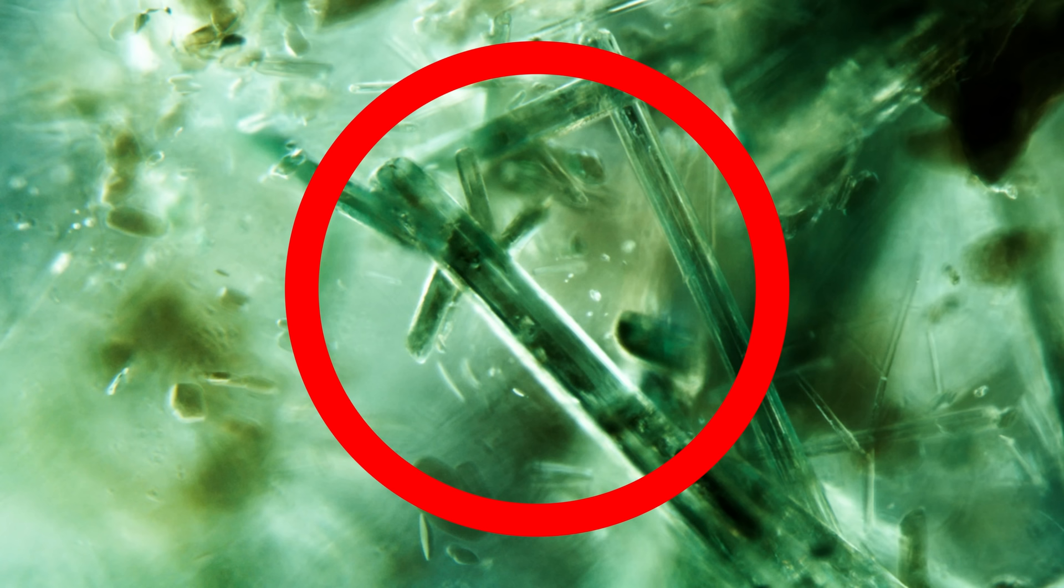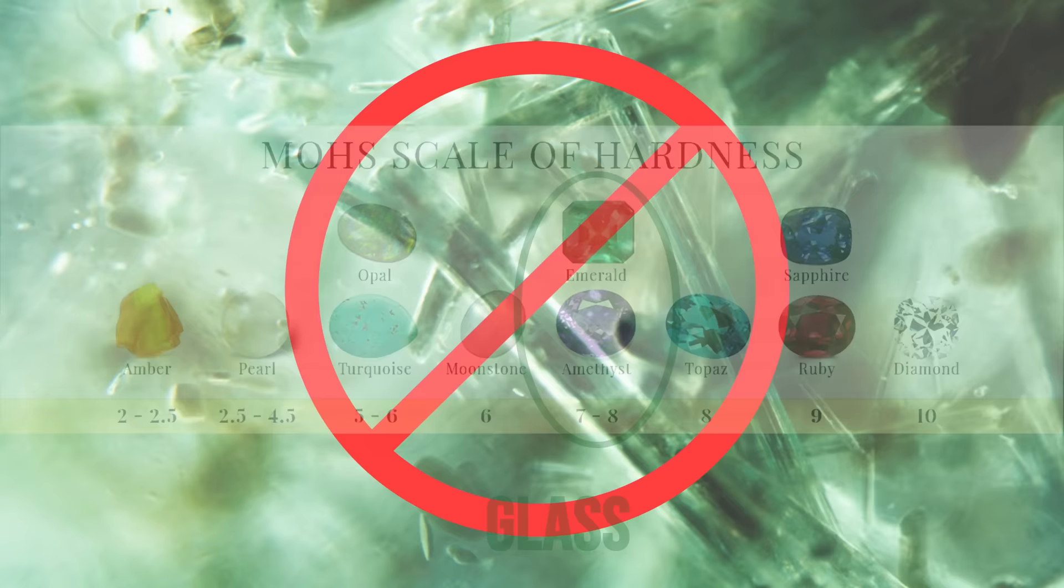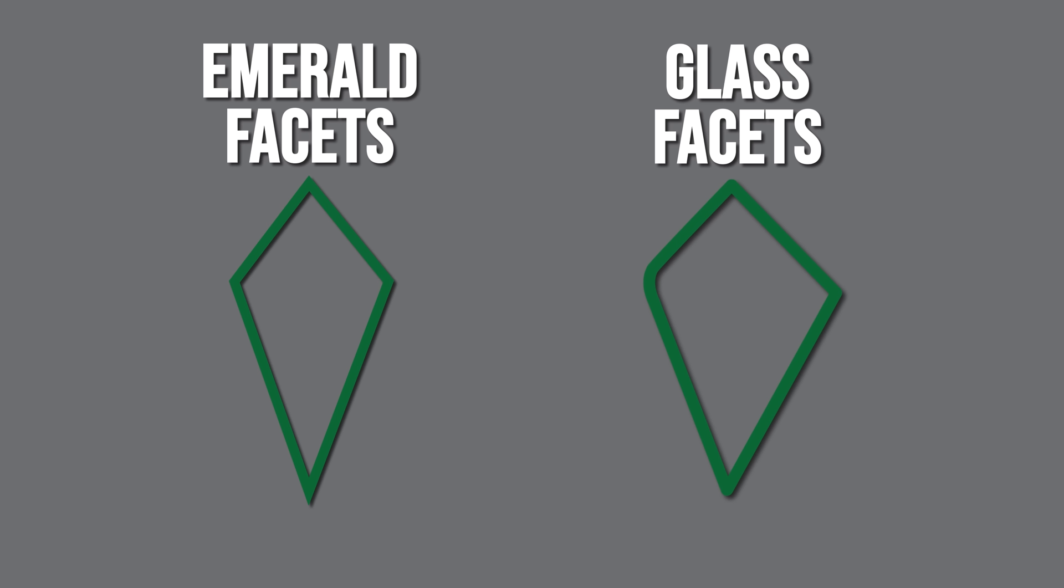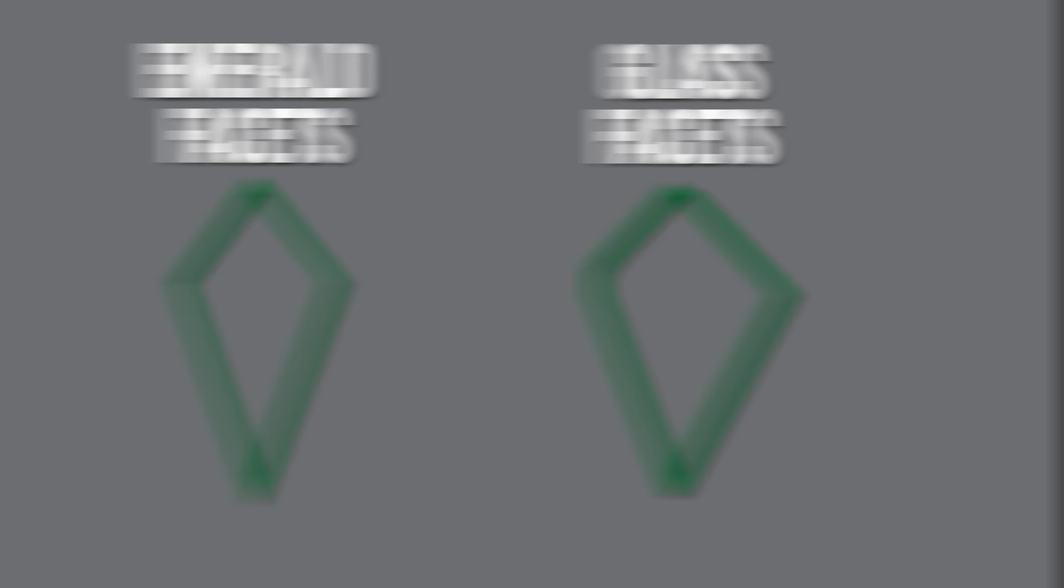It might even be YAG. Another common imitator is glass. And like the other imitators, it just doesn't have the jardin going on. On top of that, it's relatively soft and it's inexpensive. So you might have some facet edges that don't quite line up. The points won't quite meet how they're supposed to. You can have rounded facet edges and you can even have chipping on your facet edges. Whereas with a faceted emerald, the facet edges are going to be much sharper, cleaner, and more precise because it's a more valuable material.